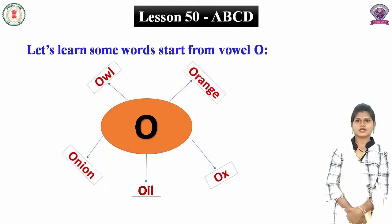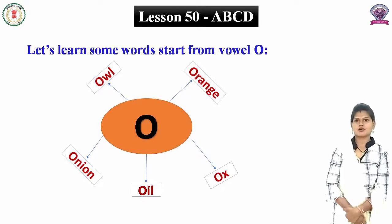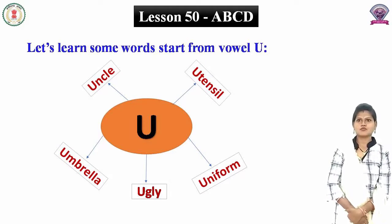Woh O se shuru hone wale kuch shabd dekhenge. O se owl. Owl means ullu. O se orange. Orange means santra. O se ox. Ox means bail. O se oil. Oil means tel. O se onion. Onion means pyaaz.